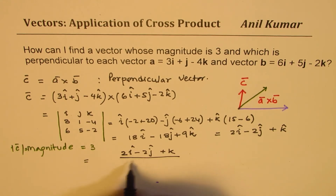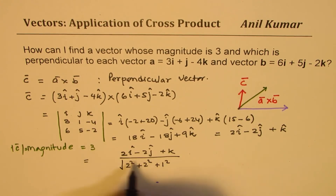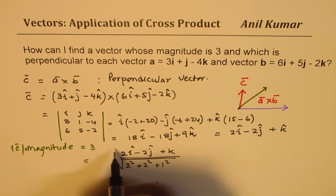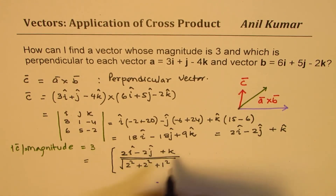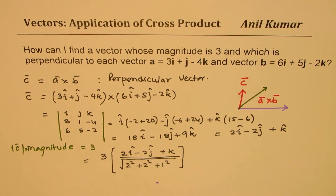We divide by its magnitude, which is √(2² + 2² + 1²) = √(4 + 4 + 1) = √9 = 3. Once we do that, we multiply by 3, so that gives us a magnitude of 3.